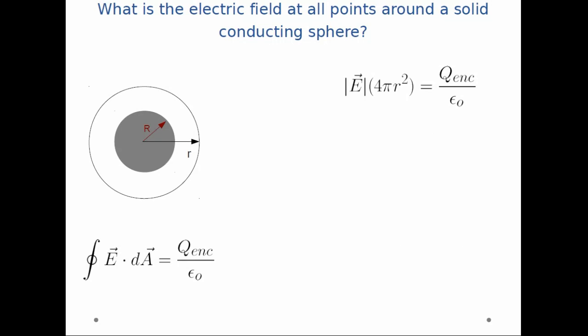And so now, when we're outside the sphere, the enclosed charge is just plus q, and all of it resides on the surface. So E is just equal to kq over r squared, which is what we would expect to get if we are far away from this ball of charge.